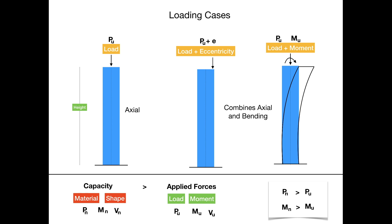Coming to the loading cases that we can expect in design of columns, there are basically two kinds of loading. The first is axial-only loading and the second is combined axial and bending. In axial loading, we only have the applied load at zero eccentricity, meaning it is applied at the center of the column, and it will only cause compressive forces. Our concern will mostly be the compressive capacity of the column, because the column is most probably going to fail by crushing.